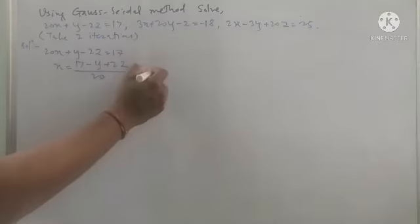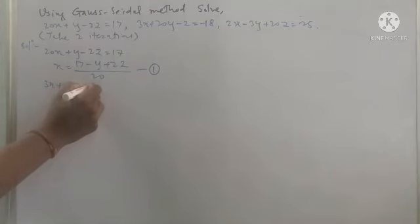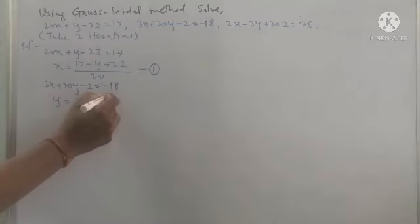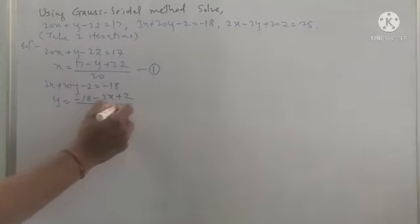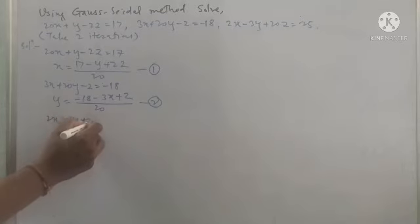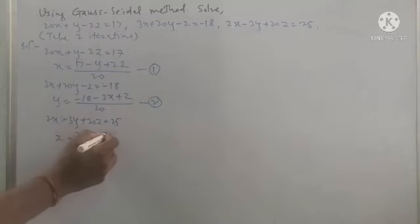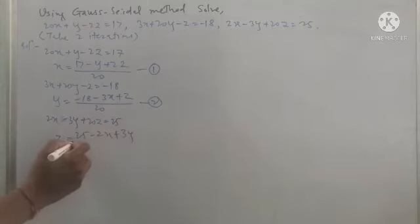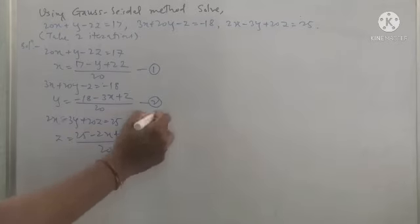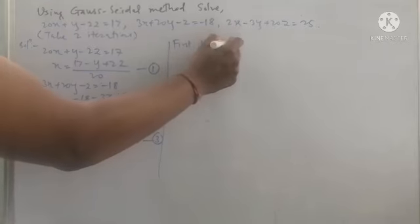For the second equation, 3x + 20y - z = -18, we get y = (-18 - 3x + z) / 20, put as number two. For the last equation, 2x - 3y + 20z = 25, we get z = (25 - 2x + 3y) / 20, put as number three. Now for the first iteration using the Gauss-Seidel method, we take only y = 0 and z = 0 to find x naught.